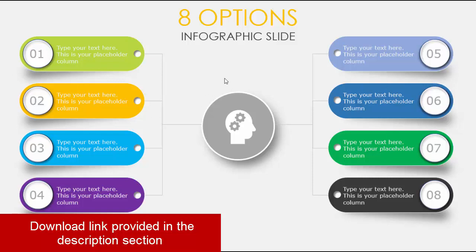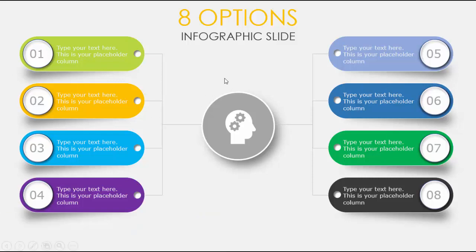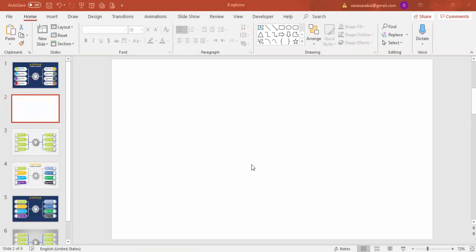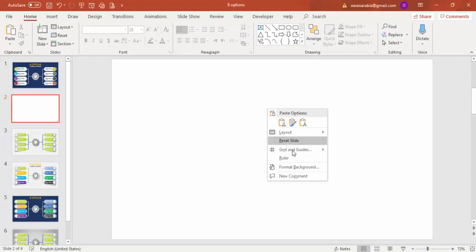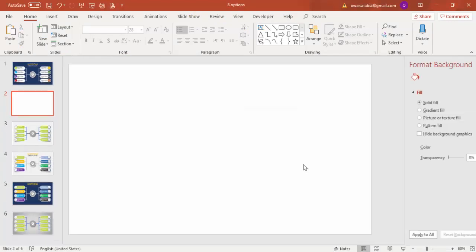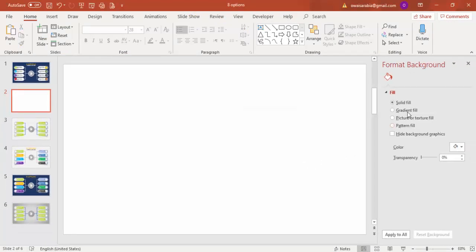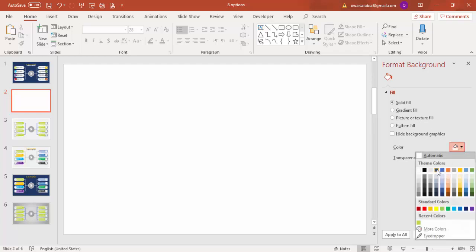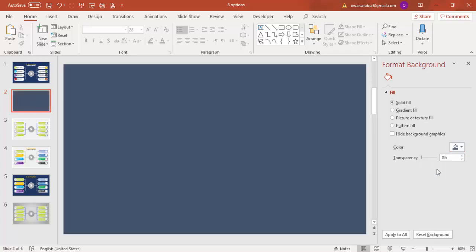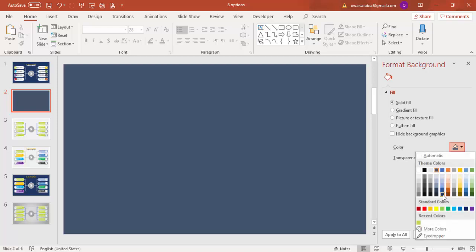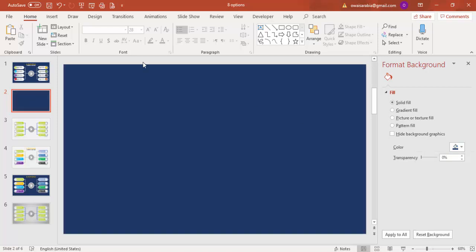Let's see how to do this in PowerPoint. Add a new slide, right mouse click, go to Format Background, select a solid fill, and give it a dark background color.